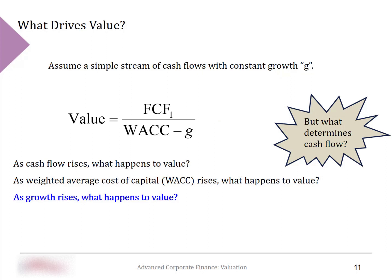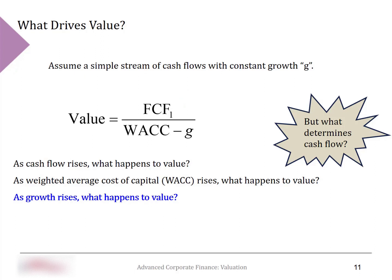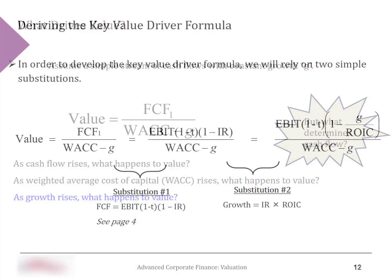From this formula, we can see that as free cash flow goes up, value goes up; if the cost of capital goes up, value goes down. It seems that if the growth rate goes up, value also goes up — but this is because we are treating growth as a completely exogenous variable. In reality, to achieve higher growth the firm may need to reinvest more or change its return on capital, both of which affect the free cash flow in the numerator.